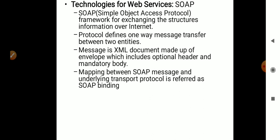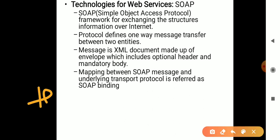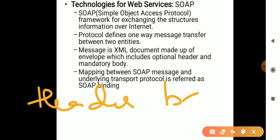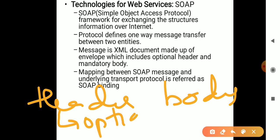The next technology is SOAP — Simple Object Access Protocol. It is a framework used for exchanging structured information over the internet. It is made up of an envelope, which includes a header and a body. The header is optional, and the body contains all the information.